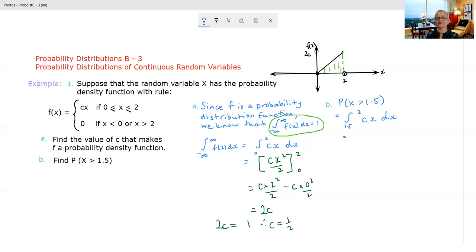The second part of the question we now know what c is. So if I'm finding the probability that x is greater than 1.5, we're really just concerned with this now because there's nothing above 2. So it's going to be from 1.5 to 2 of a half x. So we're going to get x squared on 4. So we're going to get 2 squared on 4 minus 1.5 squared on 4. We get 1 minus 9 on 16 which is 7 on 16. Okay so that gives you that probability there.